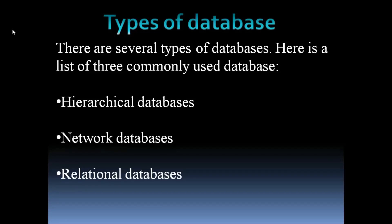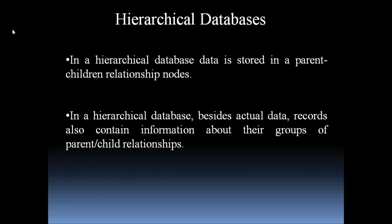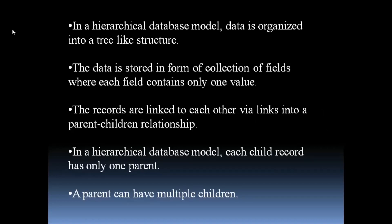So what is a hierarchical database? In a hierarchical database, data is stored in the form of a parent-and-child relationship. Besides actual data records, they also contain information about their parent-and-child groupings. The data is organized like a tree structure, stored in the form of a collection of fields where each field consists of only one value, and the records are linked to each other through links.